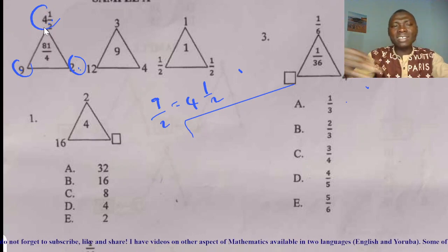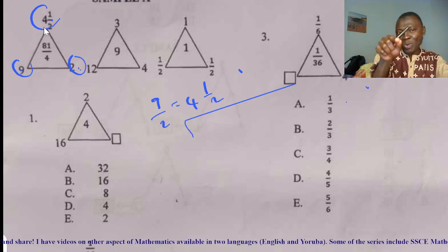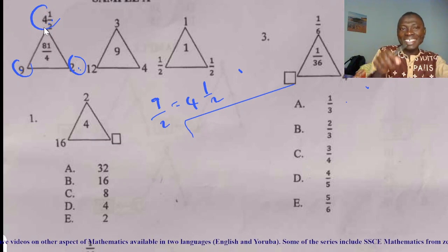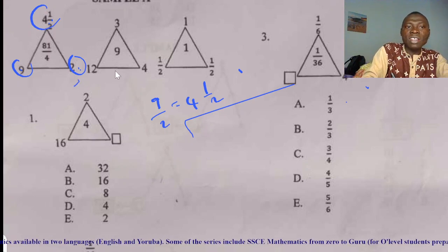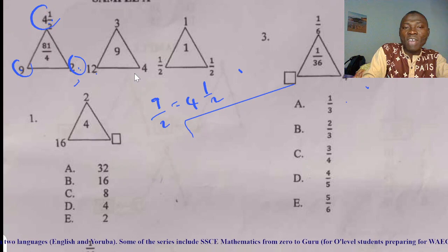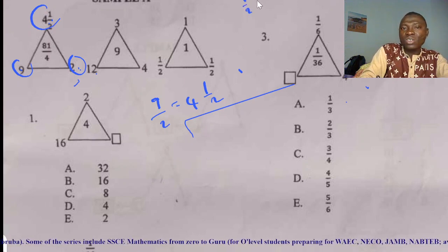But you must not conclude. You have to check if it's actually true for the rest of the examples. For example, 12 divided by 4 is also 3. Oh, half divided by half is 1. Half divided by half is the same thing as half times 2.